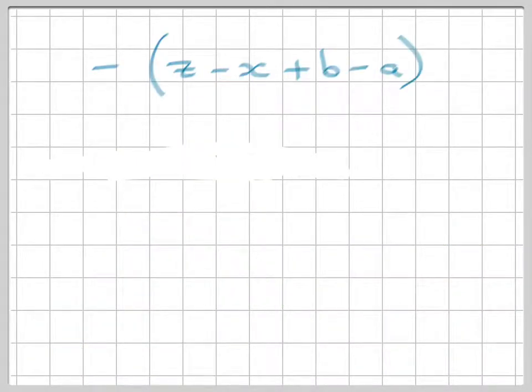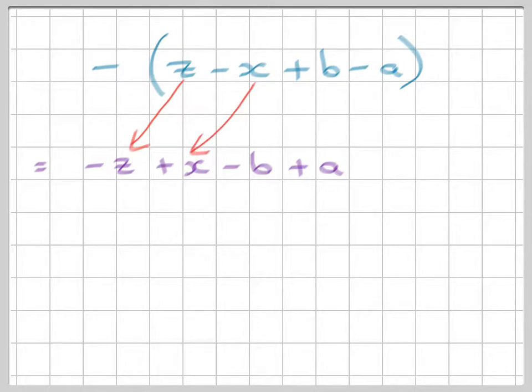We have a minus sign outside the parentheses which means we're automatically going to change everything to the opposite sign. Easy. Plus z became minus z, minus x became plus x, plus b became minus b and minus a became plus a.